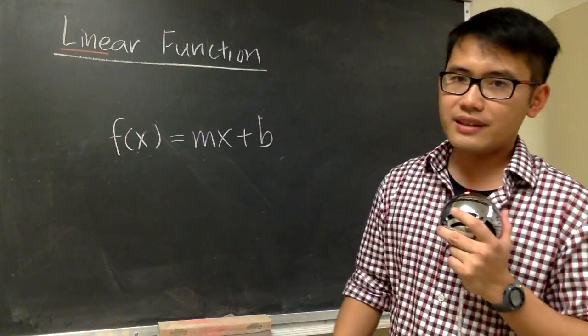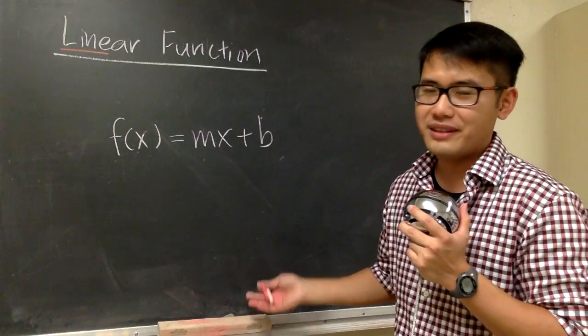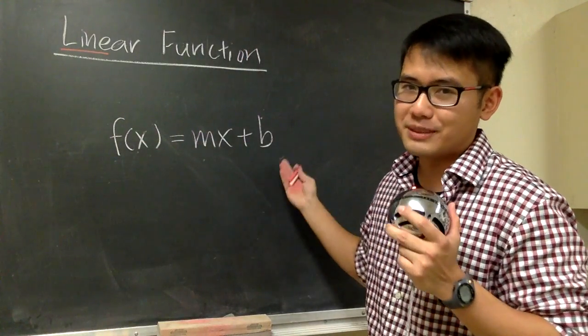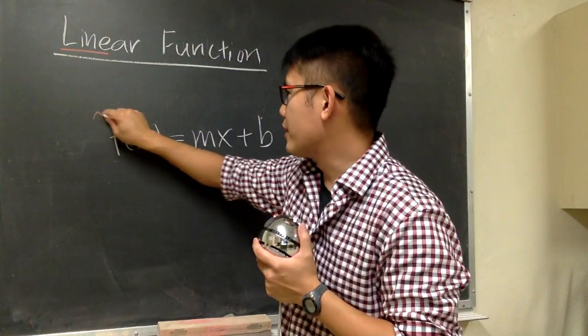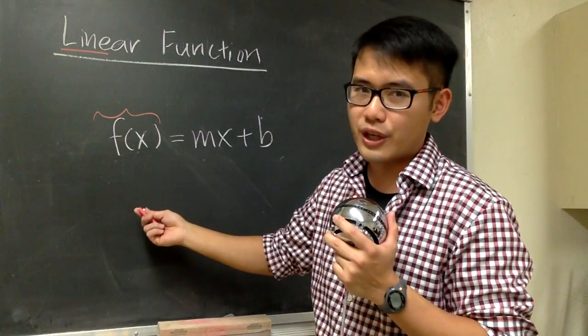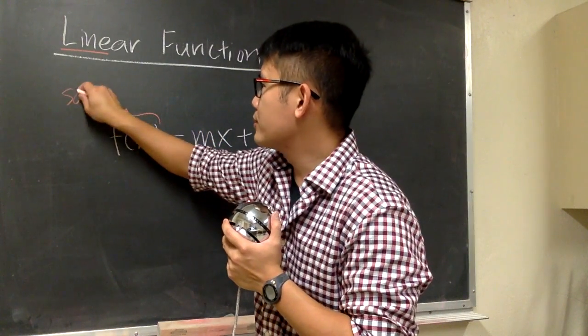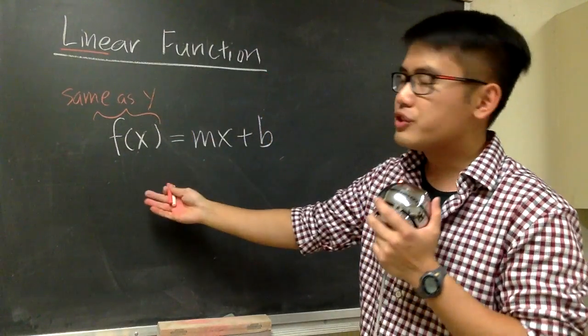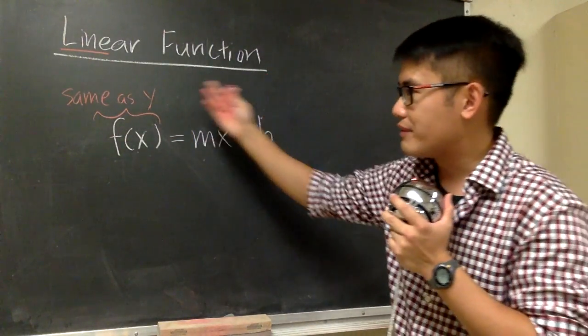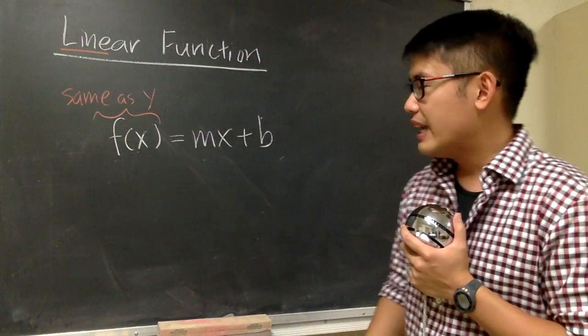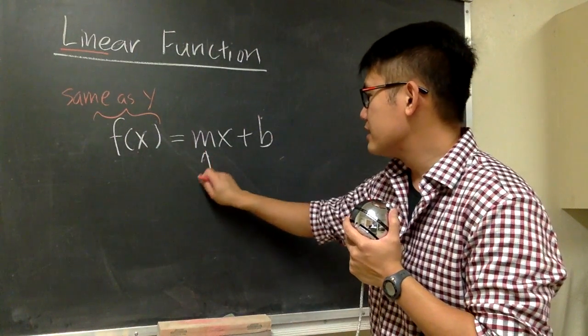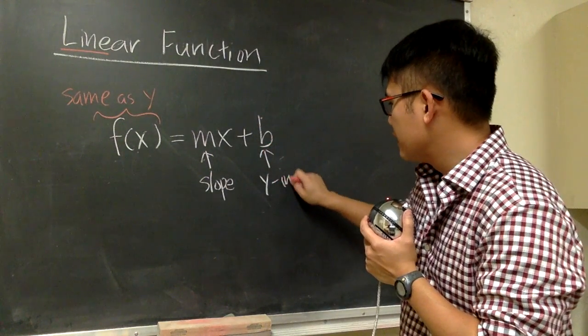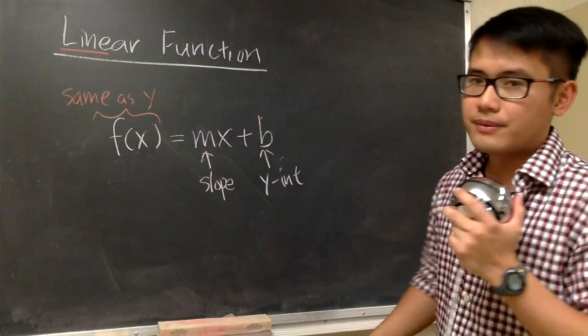And this is not stranger to you guys already, right? The typical y is equal to mx plus b. So first, let me write this down right here. f of x is the function notation, but it's also the same as y, especially when you're talking about how to graph this equation here. We know the m right here stands for the slope, and the b right here is the y-intercept.